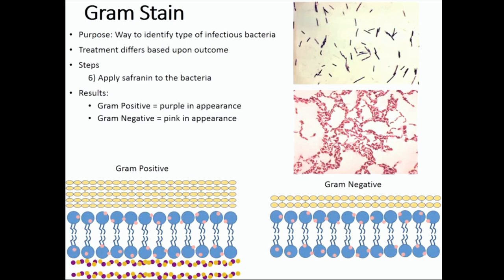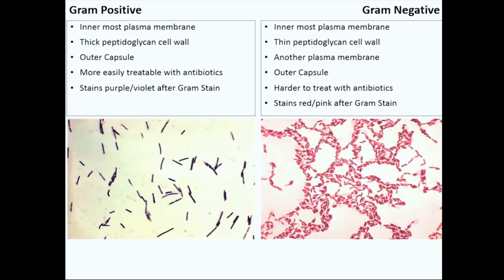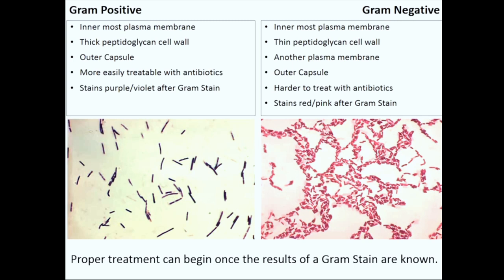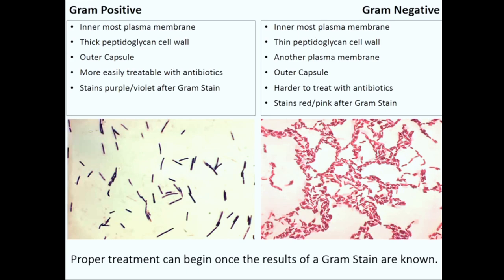To wrap up, gram positive and gram negative bacteria are shown side by side. Gram positive bacteria are more easily treatable with antibiotics because they only have one phospholipid bilayer, while gram negative bacteria are more difficult to treat due to their dual phospholipid bilayer. Now you have an idea about gram staining in food microbiology, and next we will see how gram staining is performed in the laboratory.